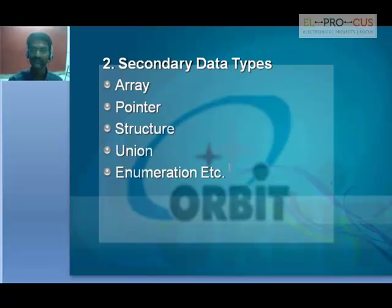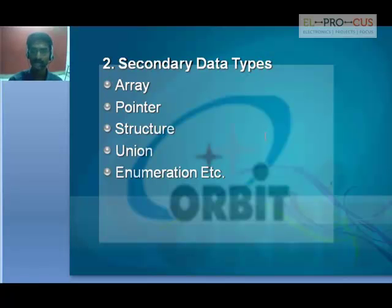Next come secondary data types. Apart from the primary data types in C language, we have secondary or user-defined data types like array, pointer, structure, enum, and unions.